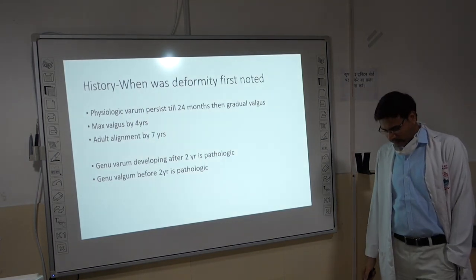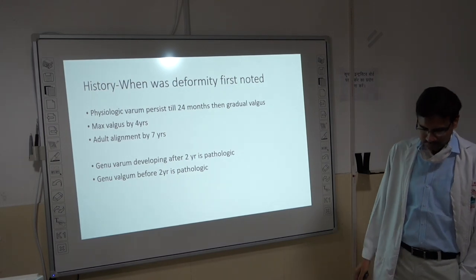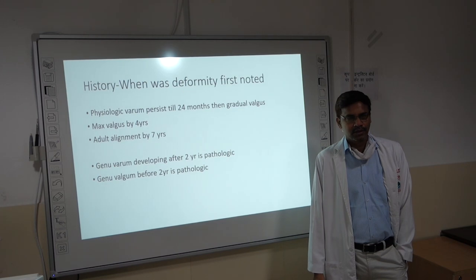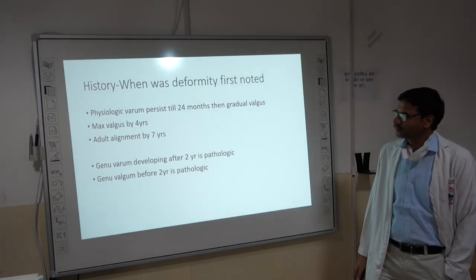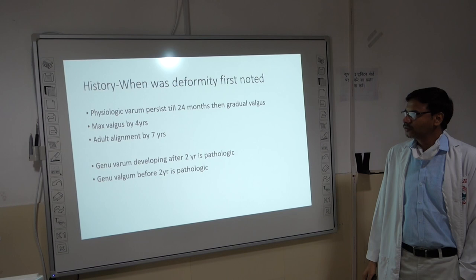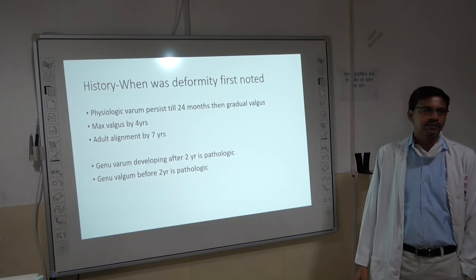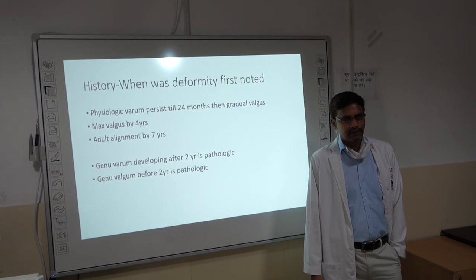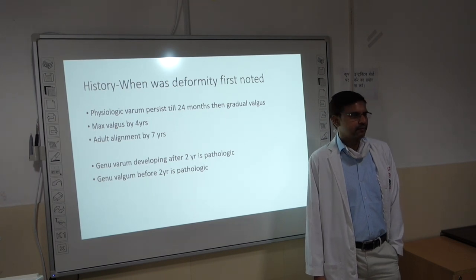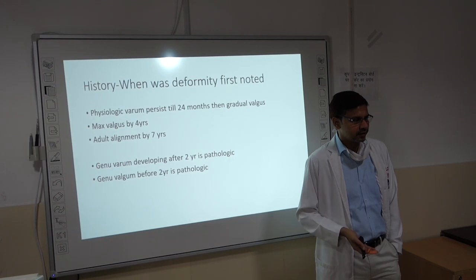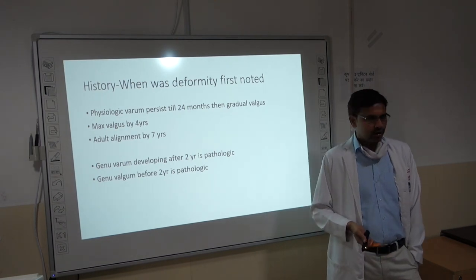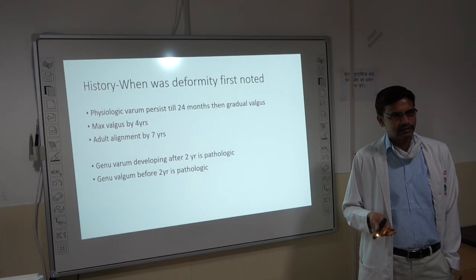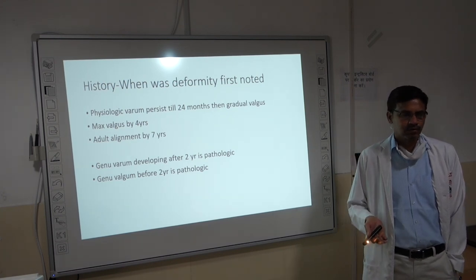When you examine a child with genu valgum or varum deformity, what are the points in history you should ask? The first thing to ask is when was the deformity first noted — whether it was noted immediately after the child started walking or much later. This is important.